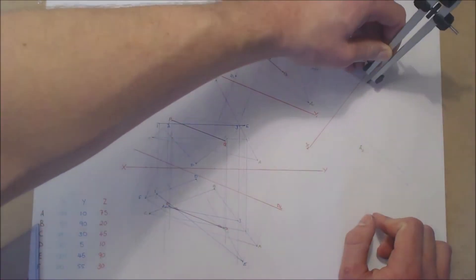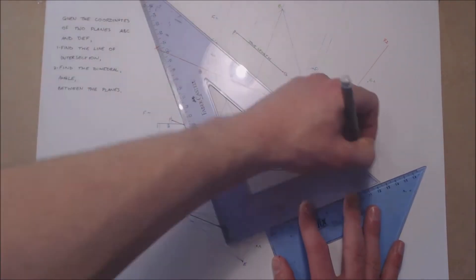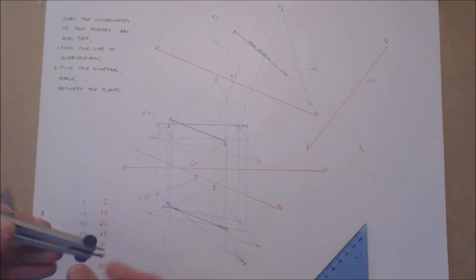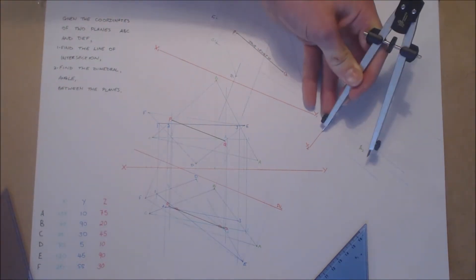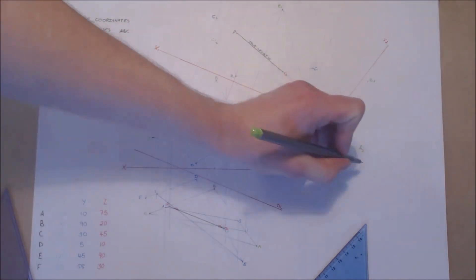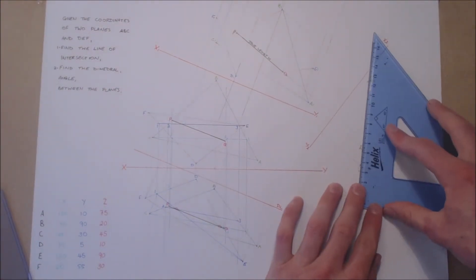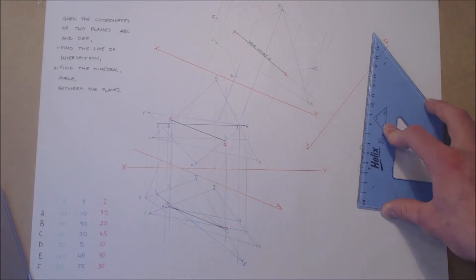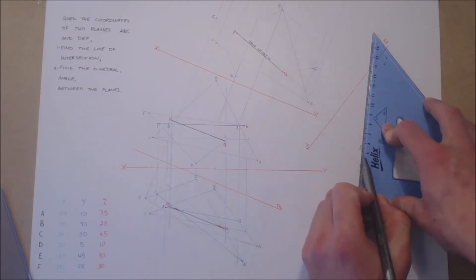All points on the planes A, B, C and D, E, F are projected into our second auxiliary and the distances transferred. Once the points are transferred, we will see the planes as an edge view.